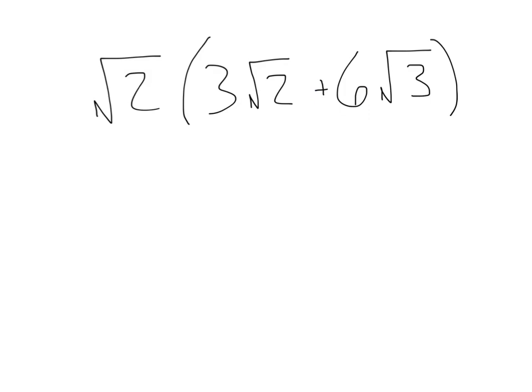Take a look at this problem here and think about what your strategy would be to simplify it. Notice there's a plus sign inside the parentheses. The square root of two is multiplying in, because of the parentheses, to the three square root of two plus six square root of three. So you would distribute.